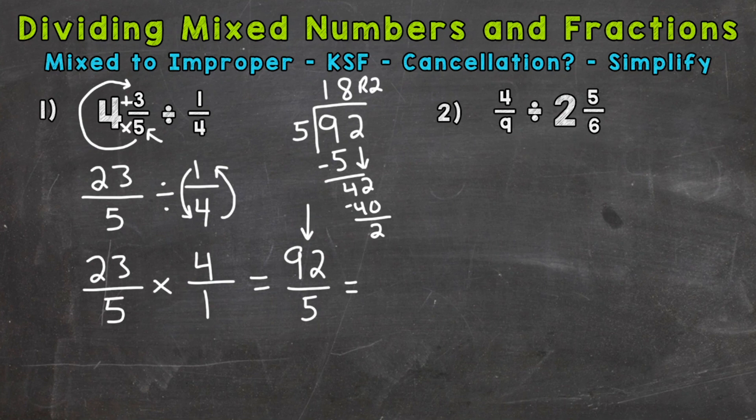So 18 whole groups of 5 out of 92. That's going to be our whole number portion of the mixed number. Now we had a remainder of 2, so that's our numerator for the fractional part. We keep our denominator of 5 the same. Always look to see if you can simplify the fractional part of a mixed number, but 2-fifths is simplified. So we are done here. 18 and 2-fifths.